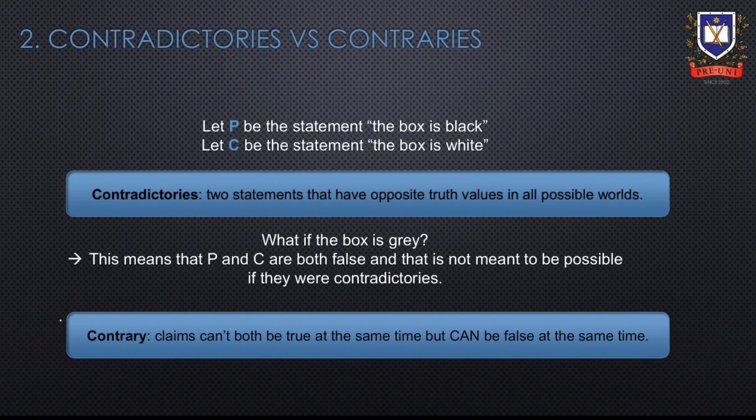Next, we will look at contradictories in a conjunction structure. A contradiction is a conjunction of the form P and not P. It is logically impossible for a claim to be both true and false at the same time, so all contradictions are false, as shown on the truth table.